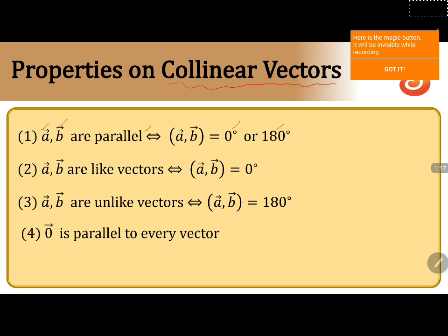Coming to the second property, we take two vectors A and B which are like vectors — meaning they have the same direction. If vector A and vector B are like vectors with the same direction, then the angle between the two vectors is equal to 0 degrees. Conversely, if the angle between A and B is equal to 0 degrees, then they are called like vectors.